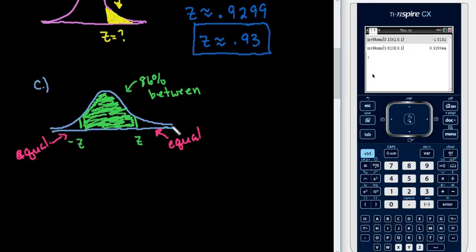So because those are equal to each other, we know that looking at this, that since we have 100% of the area has to be contained under here and 86 is in-between, we know that 14% has to be divided between these two tails.